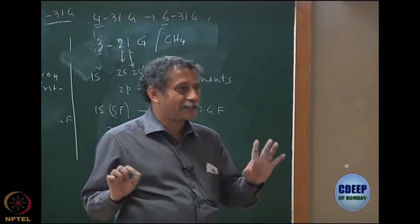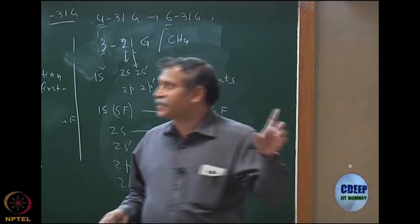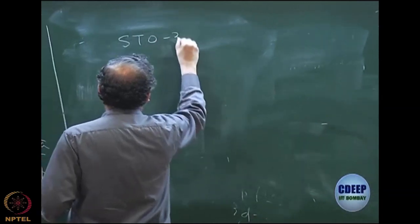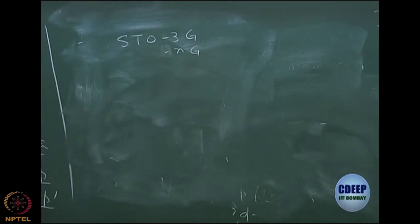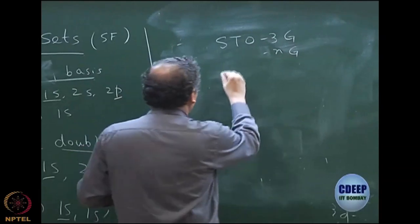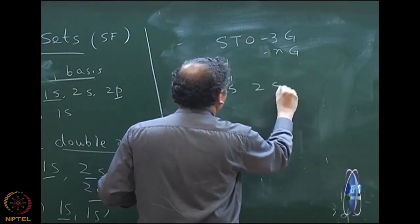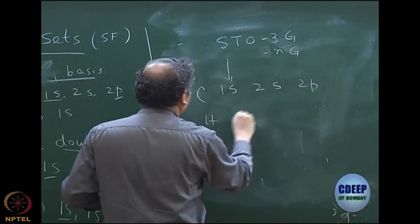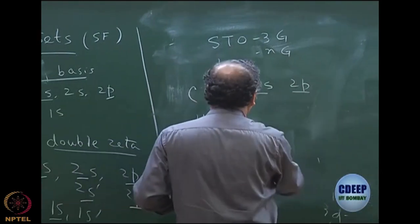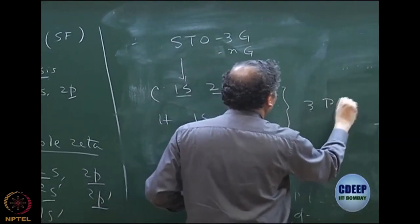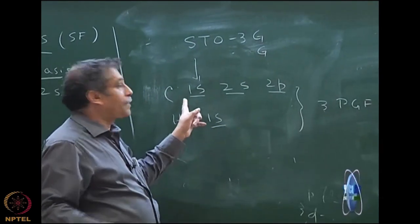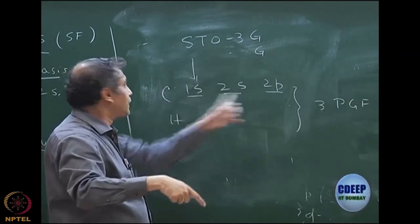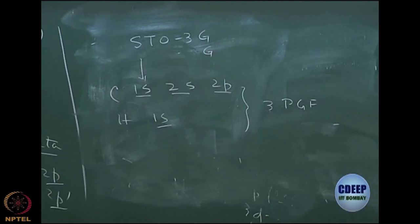STO stands for Slater-type orbital. In STO-3G I use single-zeta: 1S, 2S, 2P for nitrogen or carbon, and 1S for hydrogen. Each of these is expanded in terms of 3 primitive Gaussians. If it is STO-NG, then N primitive Gaussians. The number of atomic orbitals used is exactly single-zeta. For a methane calculation in STO-3G you have 9 basis functions.